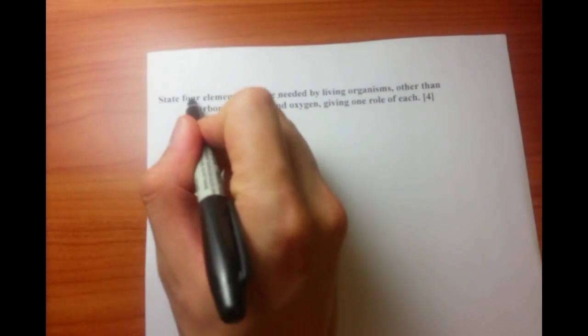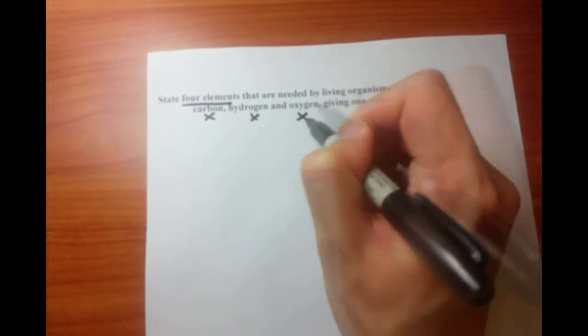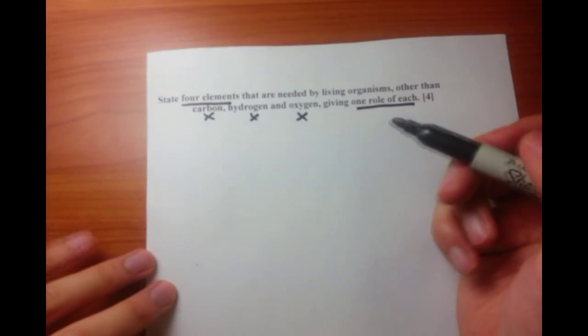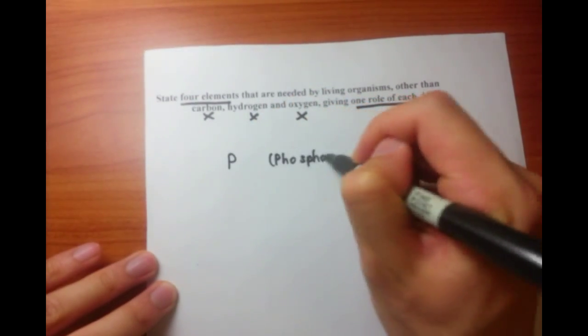When we're answering this question, we need to look at the question first. So we need to state four elements, apart from carbon, hydrogen, and oxygen, and we have to give one role of each, which we'll do right now. So I'm going to give five examples, which I'm going to label right now.